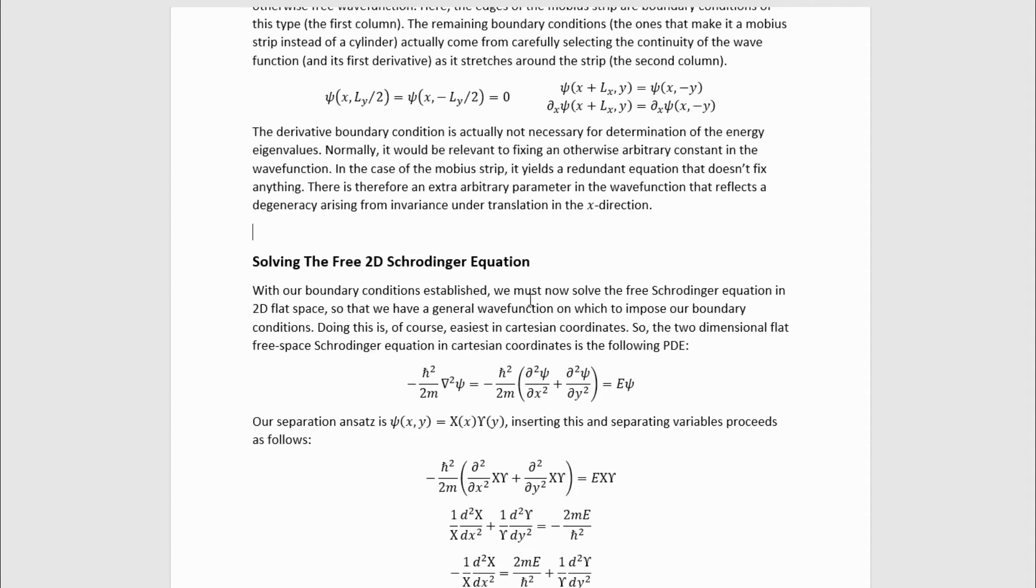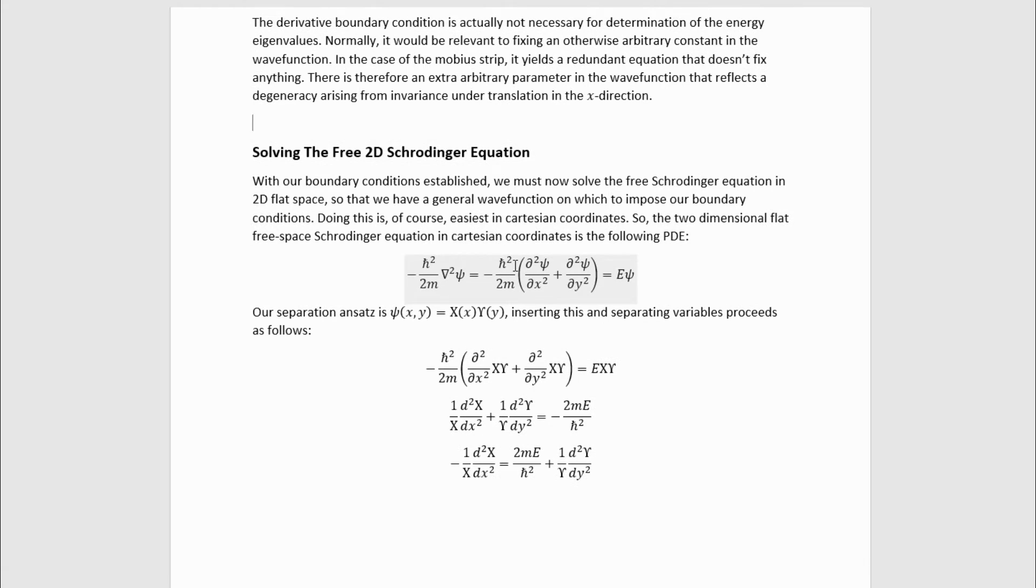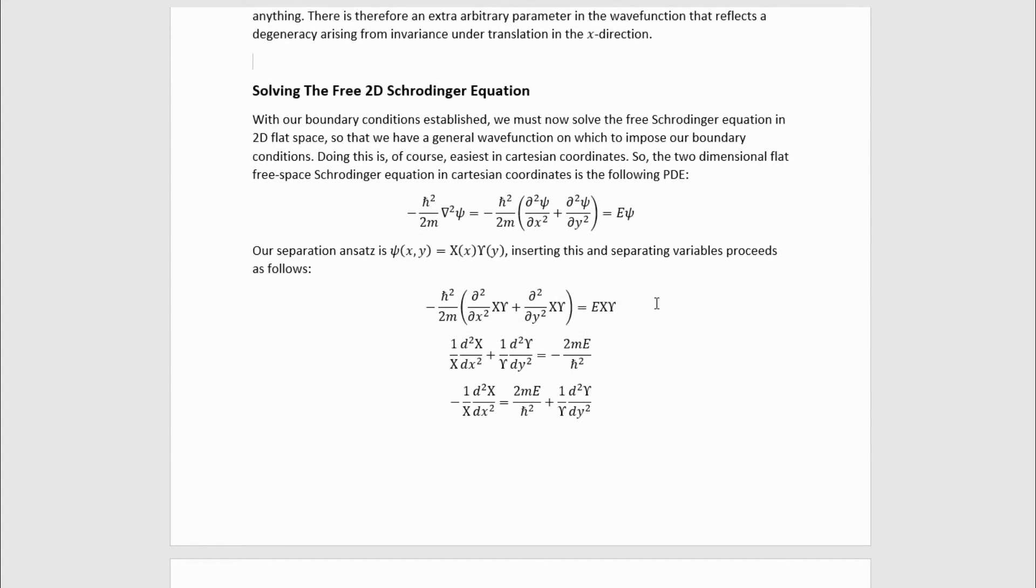With our boundary conditions established, we must now solve the free-Schrodinger equation in 2D flat space so that we have a general wave function on which to impose our boundary conditions. Doing this is of course easiest in Cartesian coordinates. So the two-dimensional flat free space Schrodinger equation in Cartesian coordinates is this partial differential equation. It's very recognizable. This is separable, so we will use separation of variables. Our separation ansatz is the usual one, inserting this and separating variables proceed as follows. So I've just inserted it. And then what I've done is I've recognized that you can pull out the factor that does not depend on the variable with respect to which you're differentiating. And what's left is a total derivative of the remaining factor.